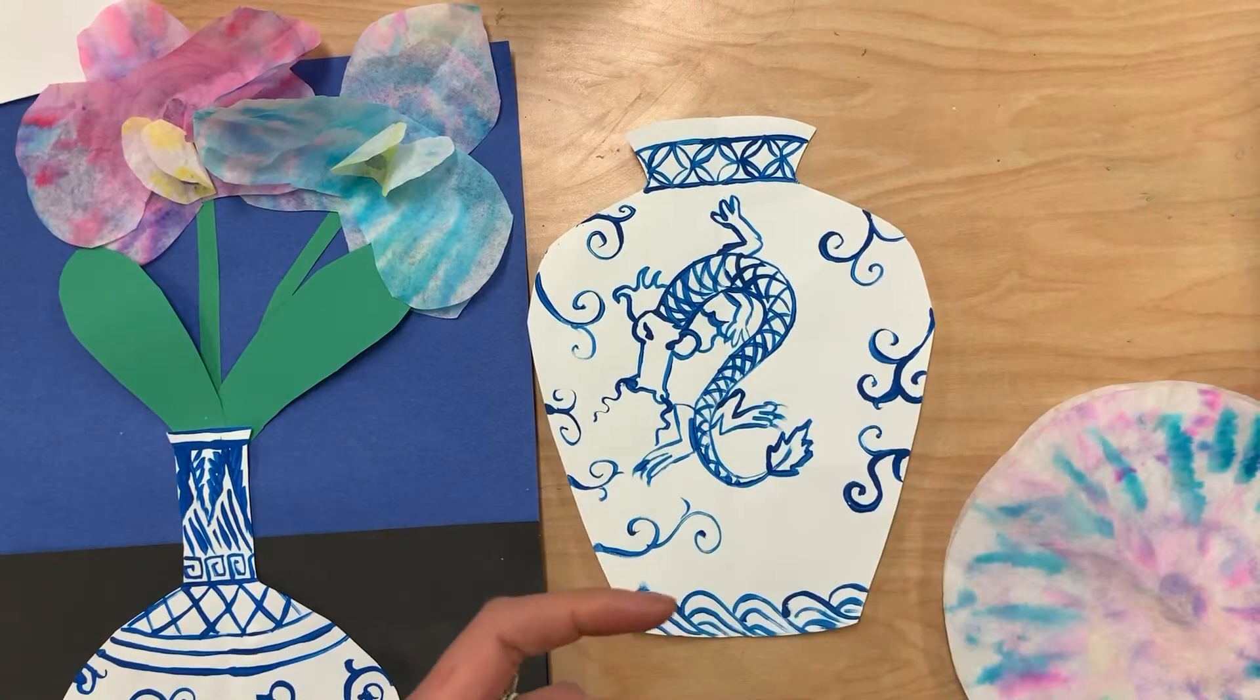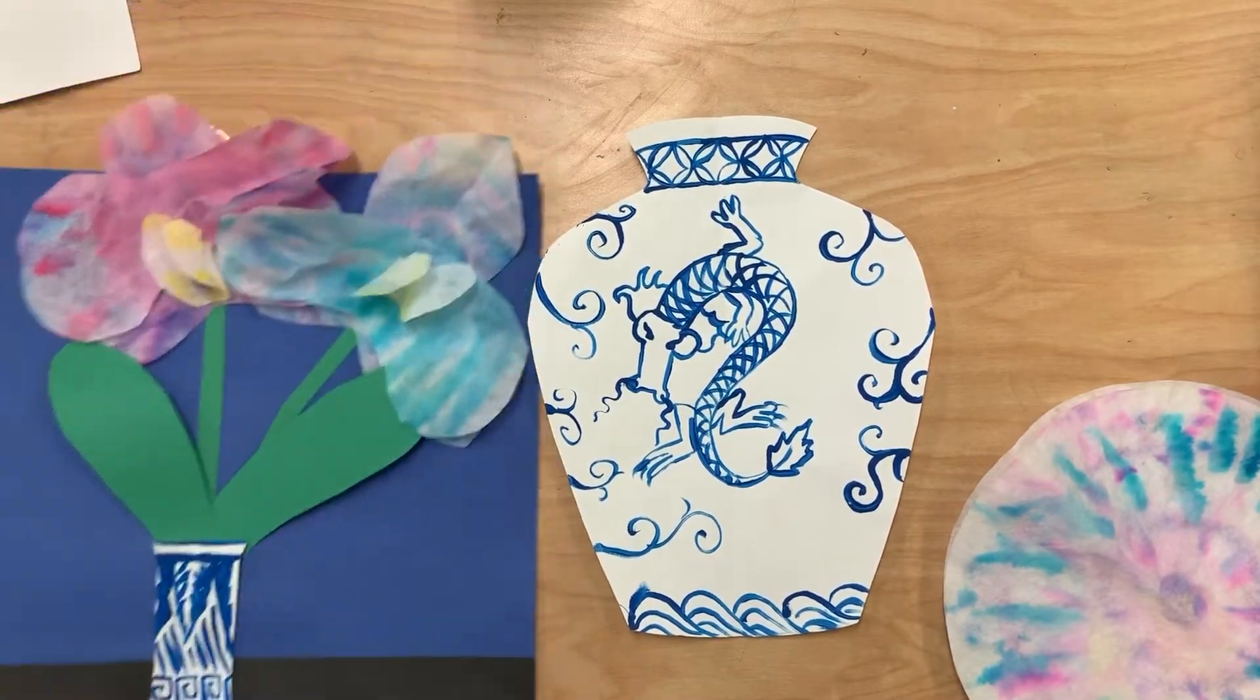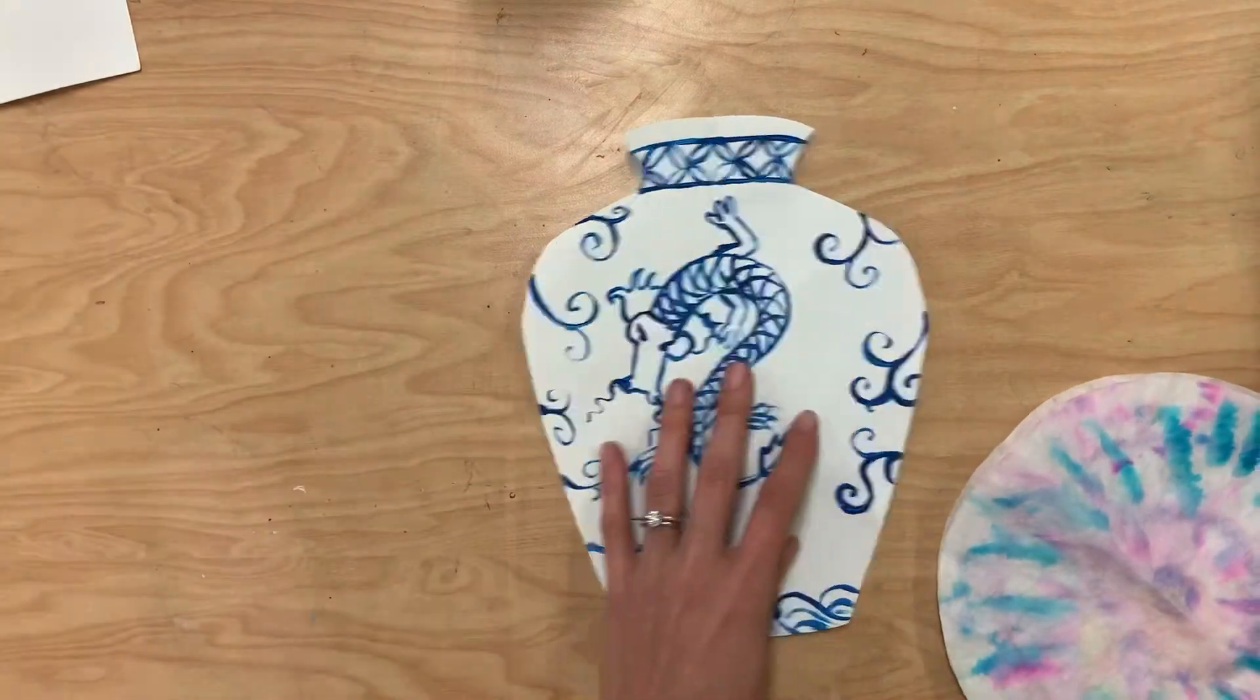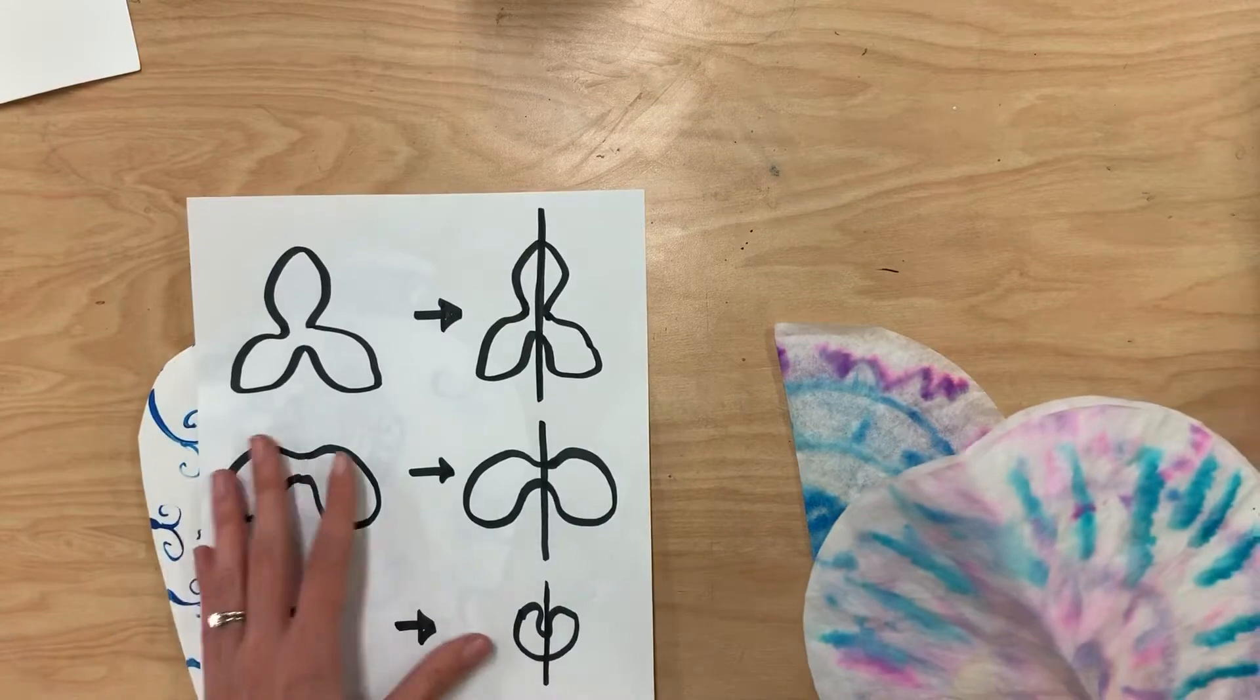Now that we've finished creating our vase and it's dry, we can begin to create our orchids. For that we're going to use our coffee filters that we made last week, and we also have a little guide that's going to help us here.